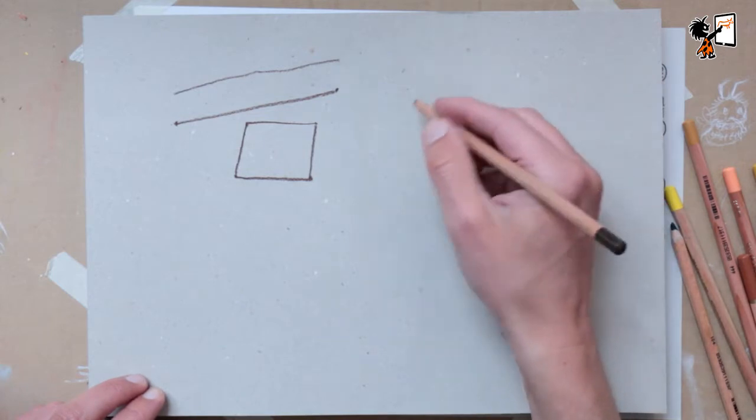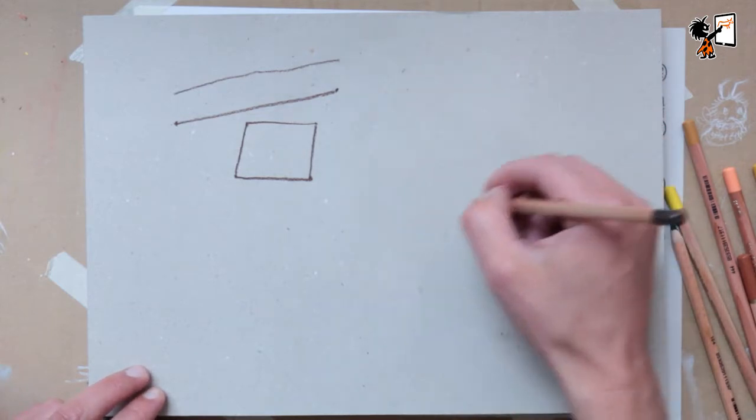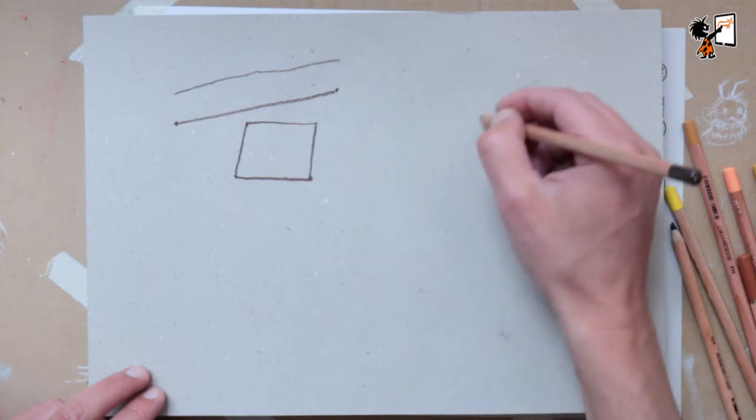Tip number two. If you want to draw a circle freehand, first make the motion with your hand and then put your pencil on your paper.